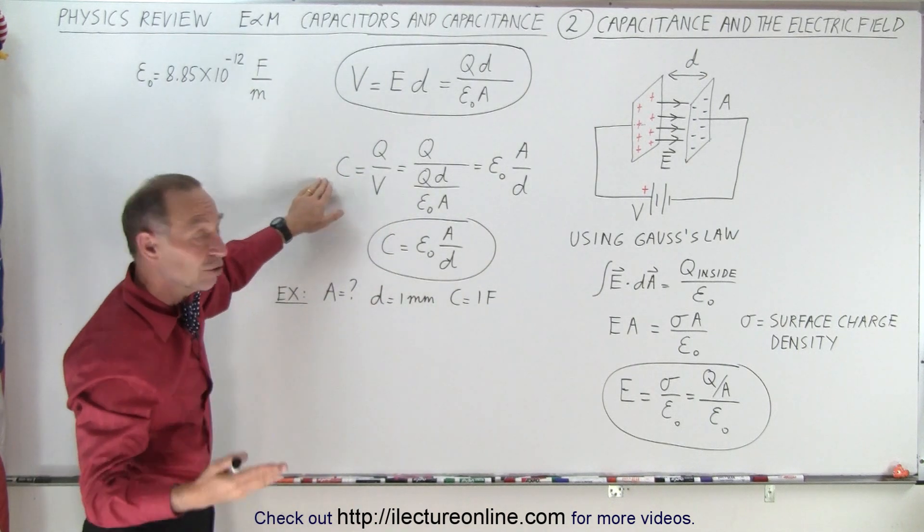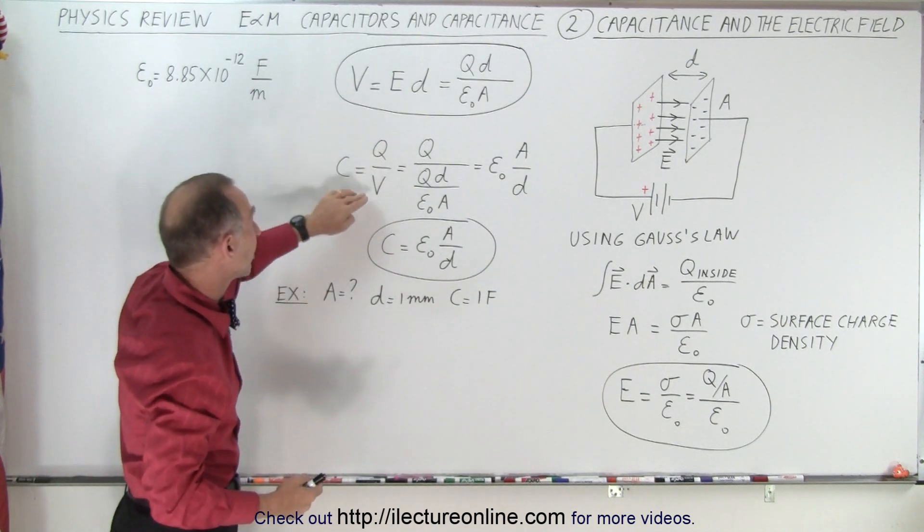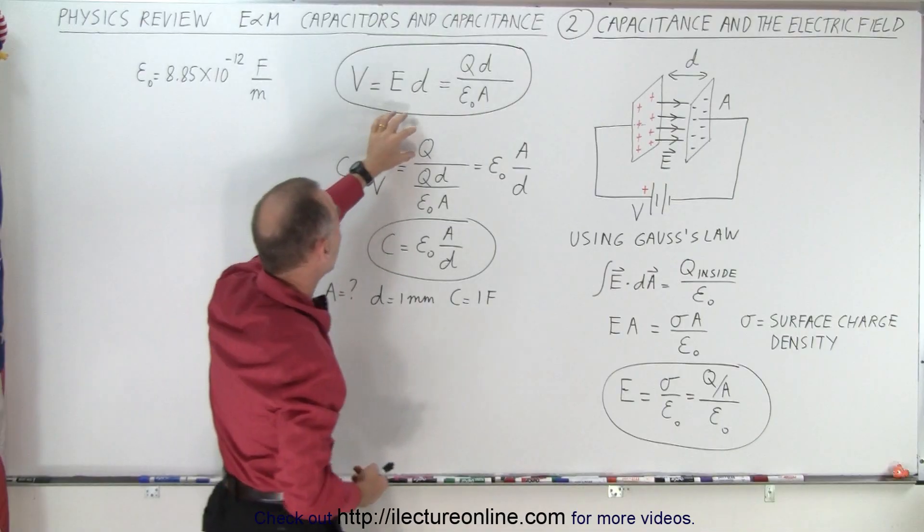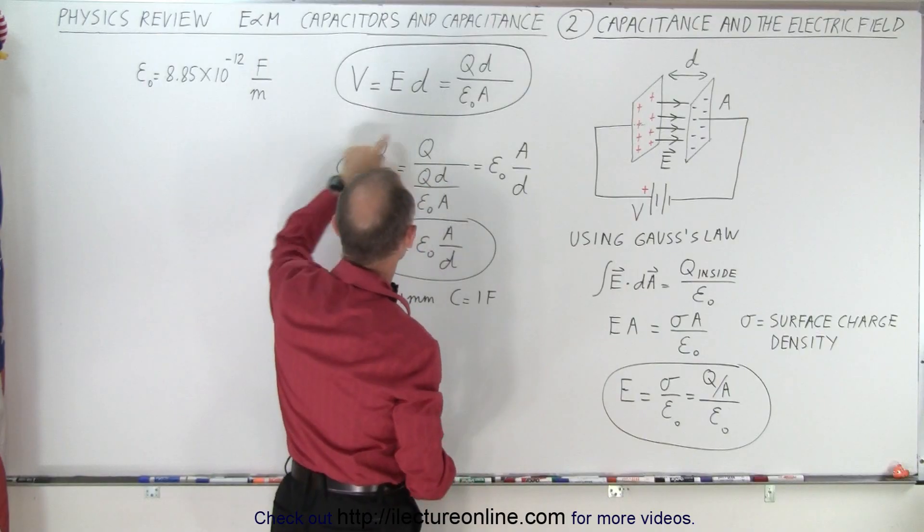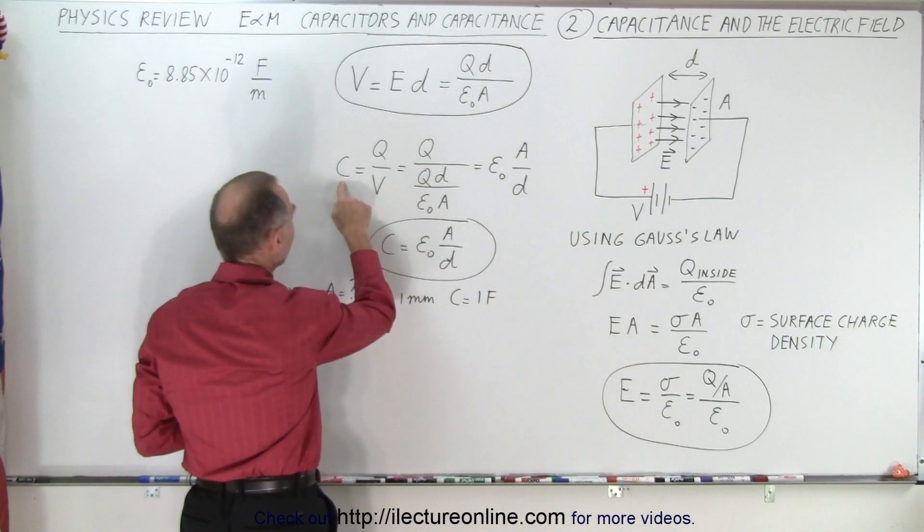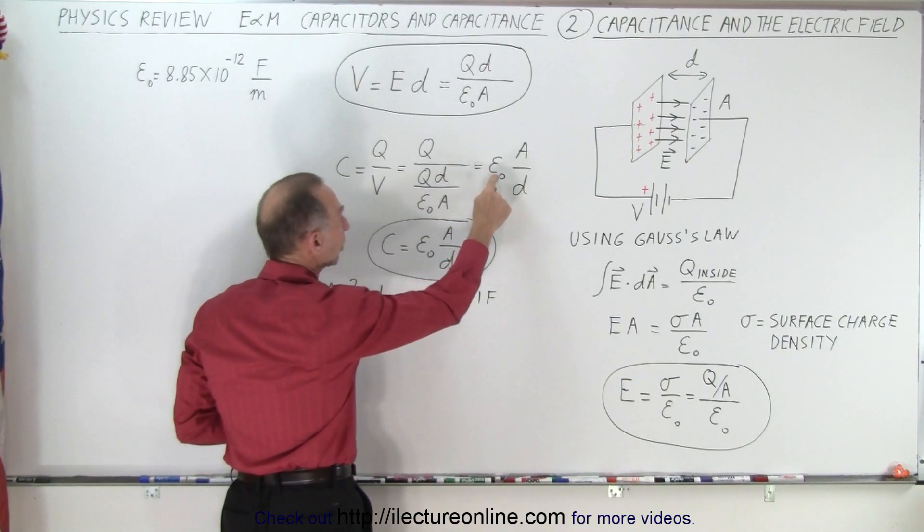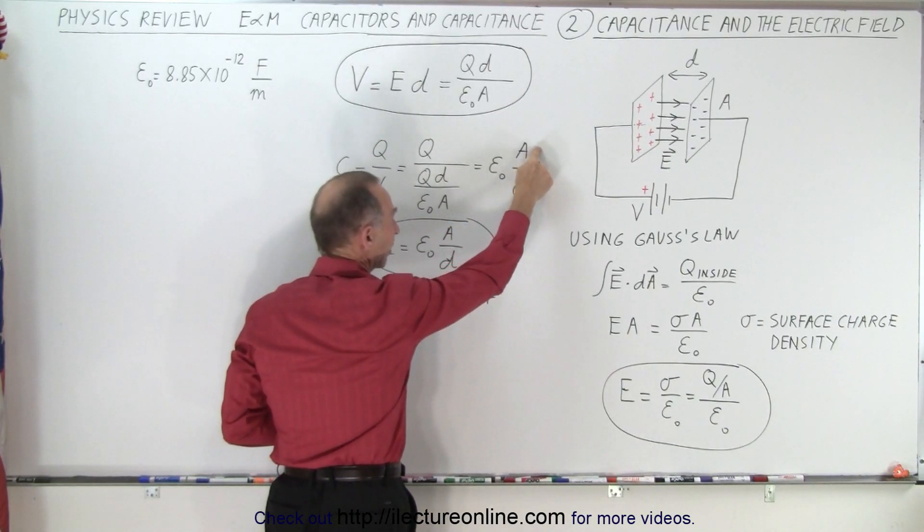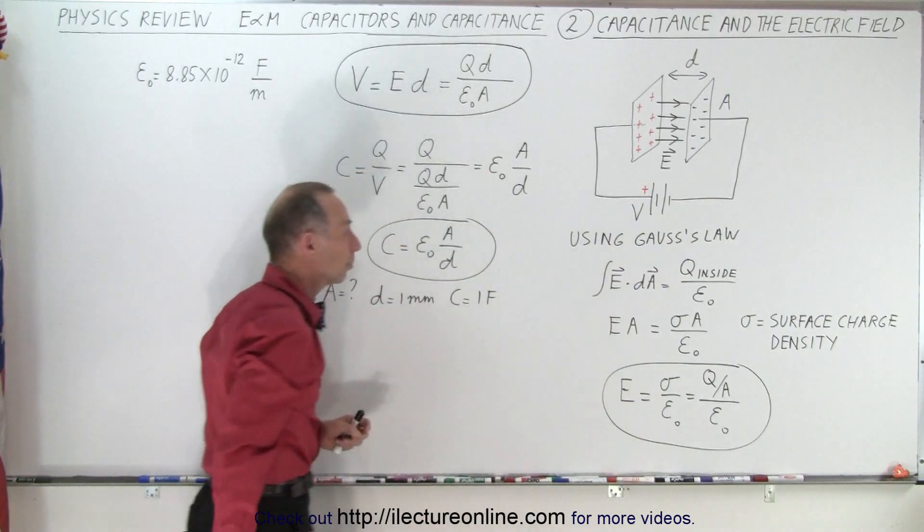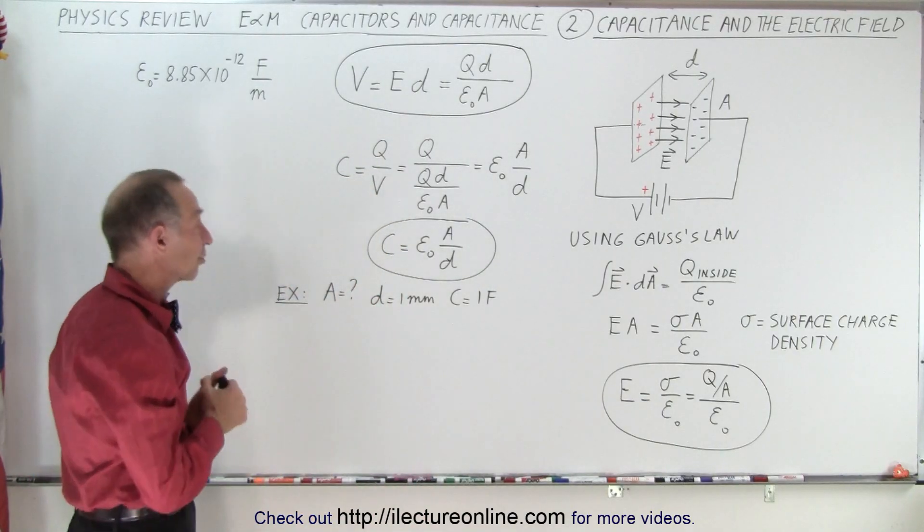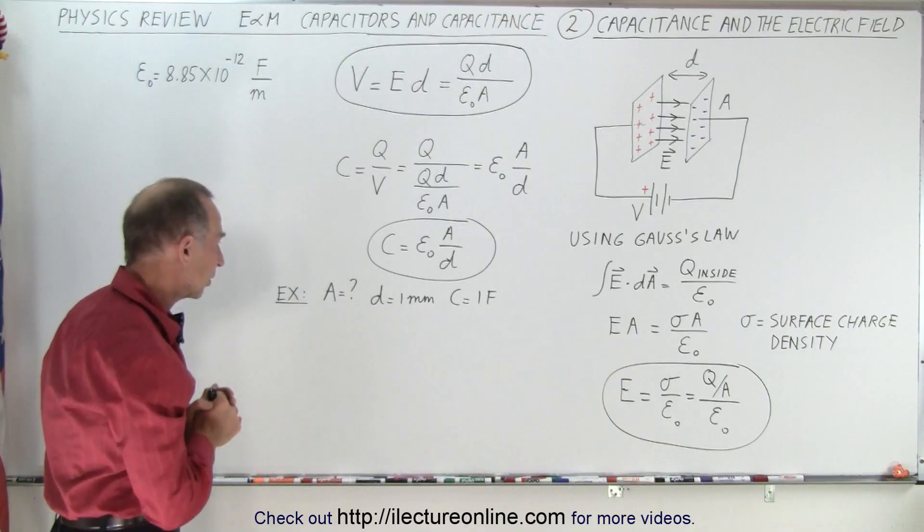And then realizing that the definition of capacitance is charge divided by voltage, we can take the charge and divide it by this quantity right here. And when we simplify it, we can see that the capacitance indeed equals epsilon nought times the cross-sectional area of the plate divided by the distance between them. So that's where that equation comes from. That's how we relate capacitance and the electric field.